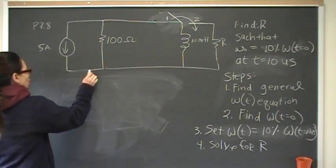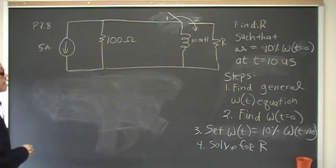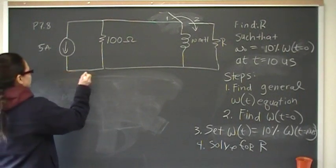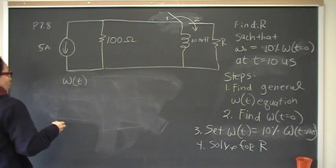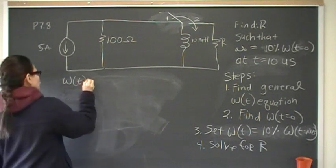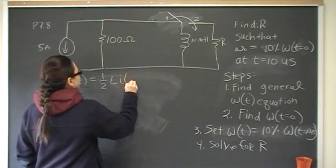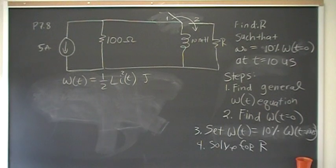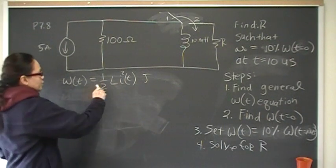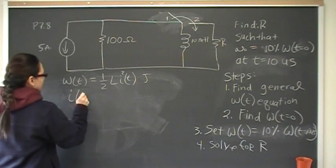Okay, so the general equation for energy for the natural response of an RL inductor of an RL circuit is omega of T, or energy of an inductor is one-half Li squared of T joules. And that's the general equation. So in order to know what that is, we need to find I. So I of T,